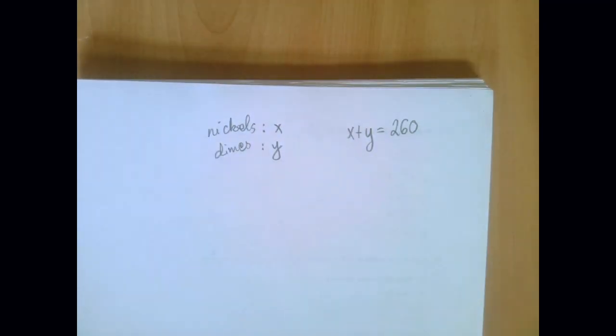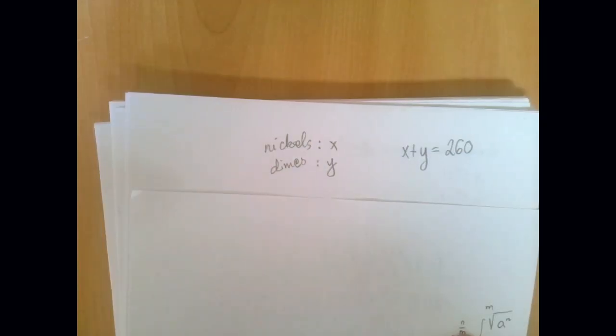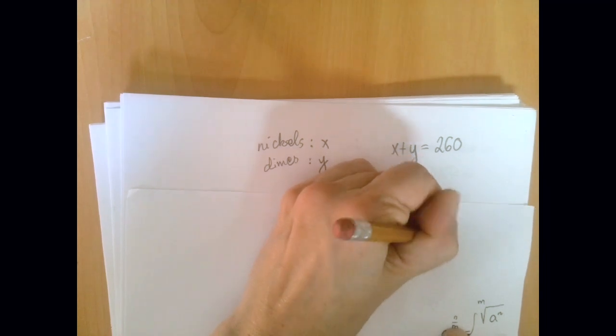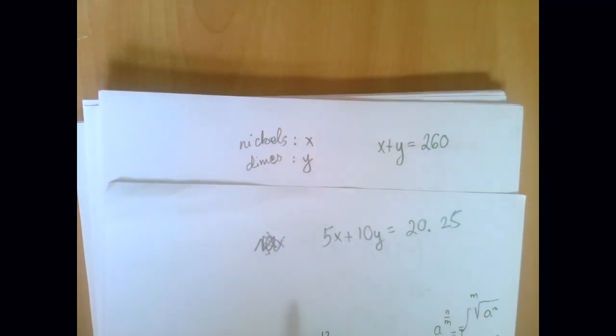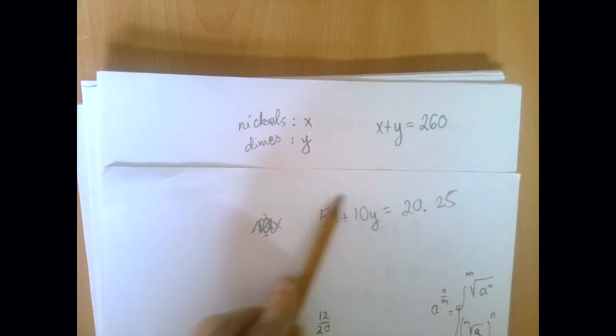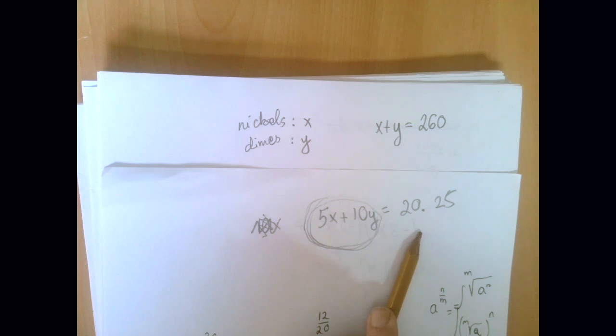Now for the second equation, I'm going to write an incorrect line that reflects the most frequent error that I see when grading students' work. This is going to be incorrect. So the total value of all coins in the jar is $20.25: 5x plus 10y equals 20.25. This is the most frequently seen error. Here is the problem: every nickel is worth 5 cents. So if you say 5x, then the left-hand side is expressing the number of cents, but the right-hand side is measured in dollars.